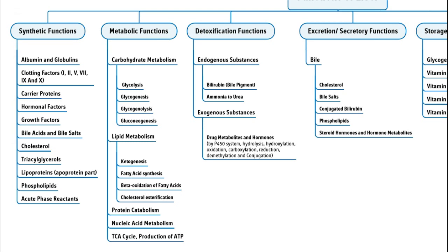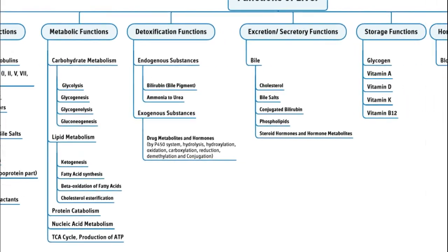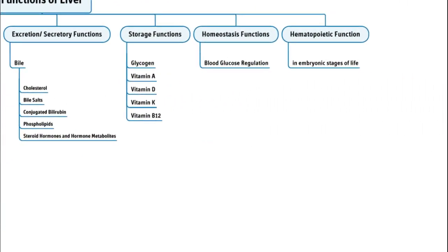Excretory and secretory functions: the secretion from liver into the biliary tract is bile, containing cholesterol, bile salts, conjugated bilirubin, phospholipids, steroid hormones, and hormone metabolites. Storage function: the liver stores glycogen, lipid-soluble vitamins A, D, and K, and vitamin B12. Homeostatic functions include regulation of blood glucose and integration of metabolism. In embryonic stages, the liver also has a role in blood cell synthesis.